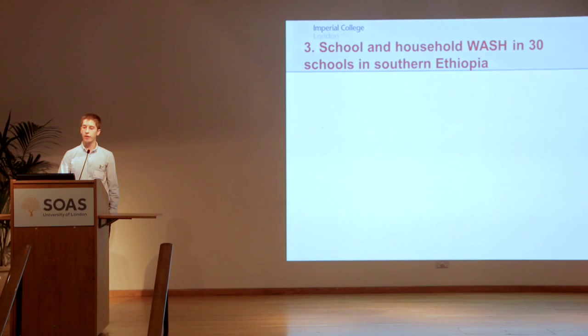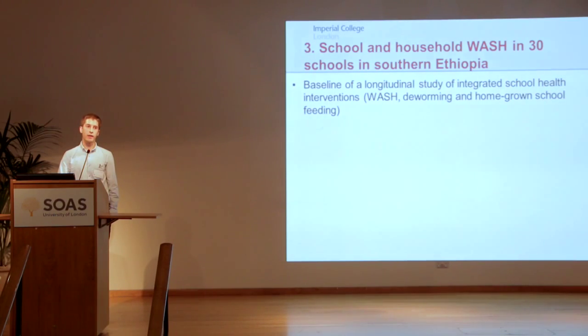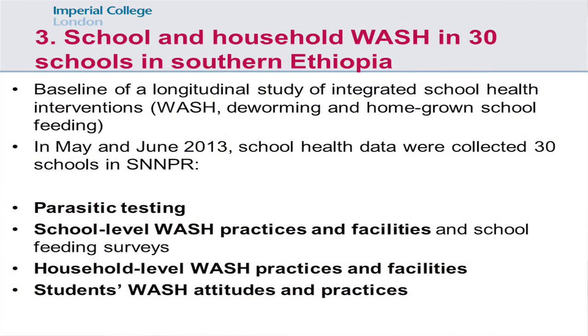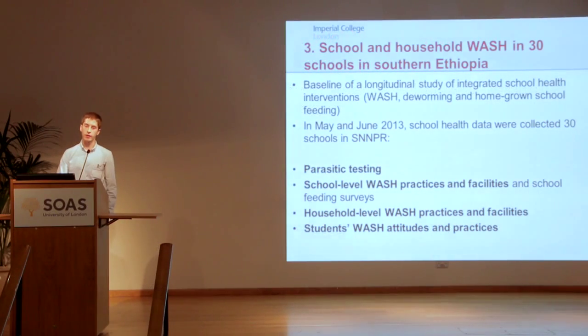Moving on to a project in southern Ethiopia — this was the baseline of a longitudinal study investigating integrated school health, combining WASH, deworming, and homegrown school feeding. The Partnership for Child Development was looking at whether these can all be combined to optimize health and education. Last year, we collected baseline data in 30 schools, which included parasitic testing, school-level WASH assessment, school feeding surveys, household-level WASH assessments, and asking students about their attitudes and practices relating to water, sanitation, and hygiene.